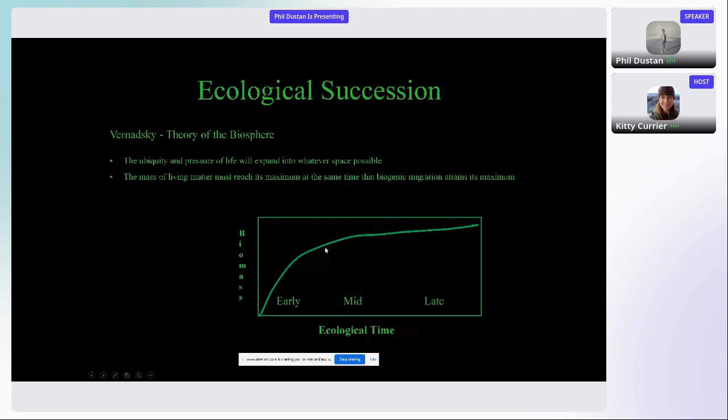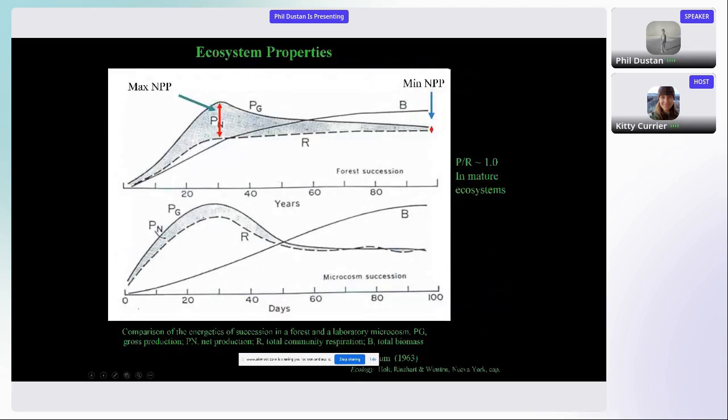The same thing happens in ecological systems. If we go back to some of Vernadsky's early work and the work of many others, Vernadsky talked about this ubiquity and pressure of life that would allow it to fill into any available space. And then he also suggested that the mass of living matter would reach its maximum at the same time that biogenic migration reaches its maximum. That's just his word for ecology. So the amount of productivity you can extract is actually the difference between net.